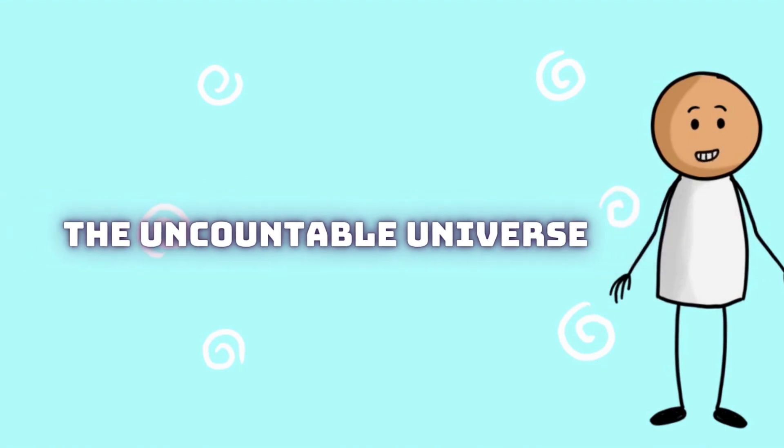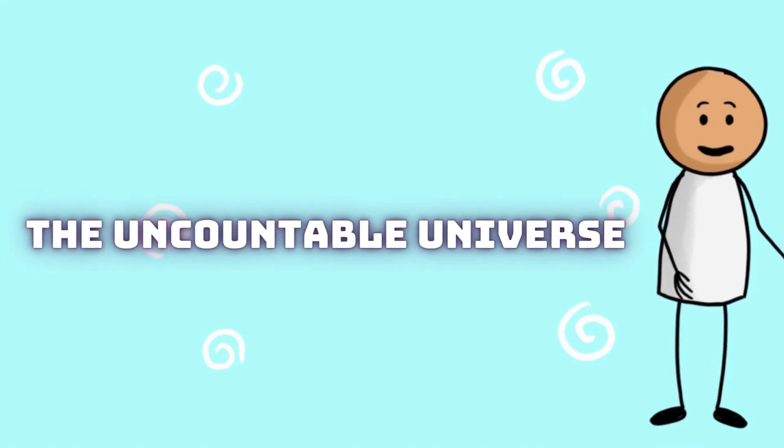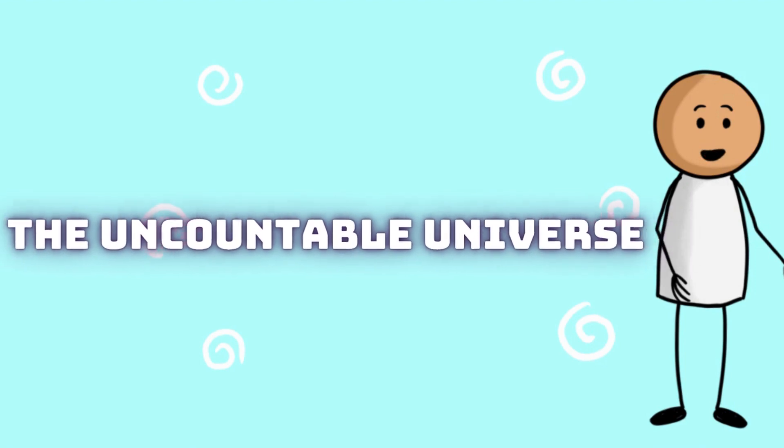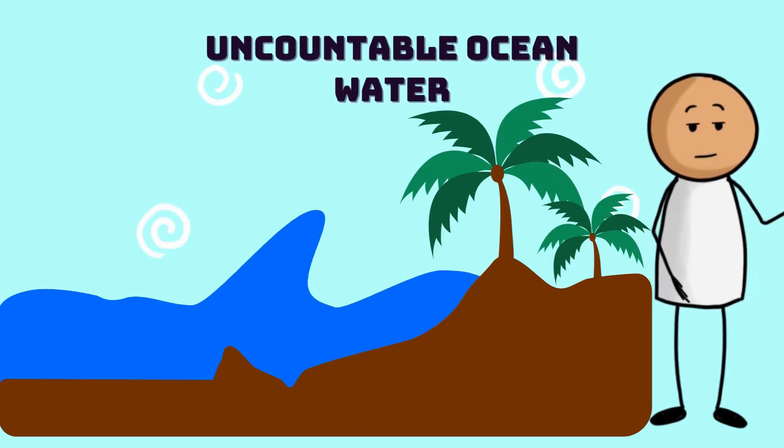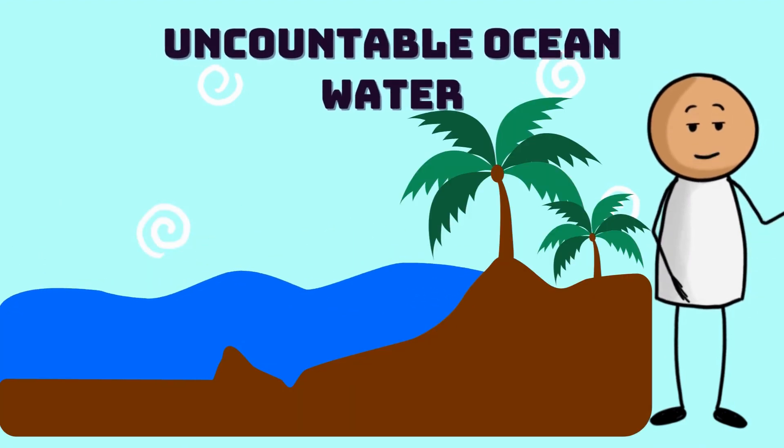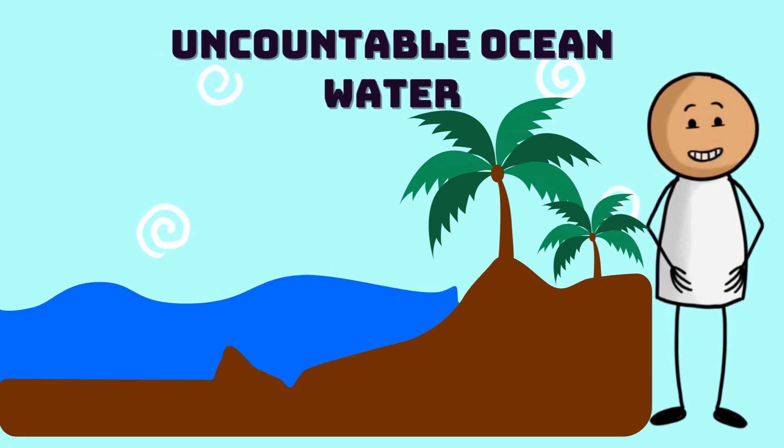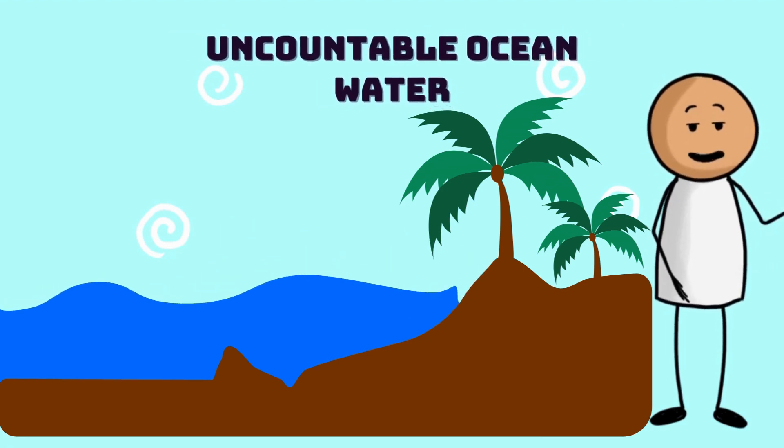Next, we're entering the uncountable universe. These are nouns you can't count individually because they're in a group or a mass. Behold, the mighty ocean of water. Can you count each drop? No, because water is uncountable. It's a mass, like the vast sea.